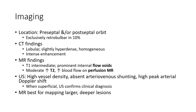Epidemiology: affects around 1% of neonates. Imaging location includes preseptal, postseptal, and exclusively retrobulbar in about 10%. CT shows slightly hyperdense, homogeneous, intensely enhancing lesion. MRI shows intermediate T1 signal with prominent flow voids, and moderately increased T2 signal with increased blood flow on perfusion imaging. Doppler ultrasound shows high vessel density and absent arteriovenous shunting with high peak arterial velocity. MRI may be preferable for larger, deeper lesions.